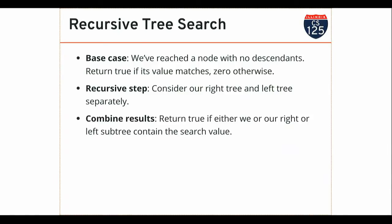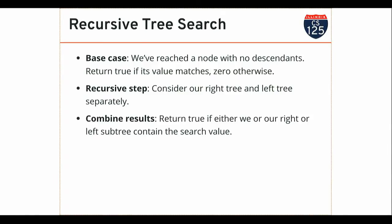Otherwise I return false. The way I combine results: if I have the value, return true immediately. Otherwise, I take the logical OR of whether the value exists in my right subtree or my left subtree. If I find the value in my right subtree and that's the one I look at first, I can stop right there.